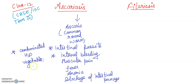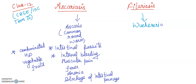The second disease to discuss is Filariasis. This is caused by a particular causative agent — the name is Wuchereria bancrofti, or Wuchereria malayi. These are both the names of the causative agent.